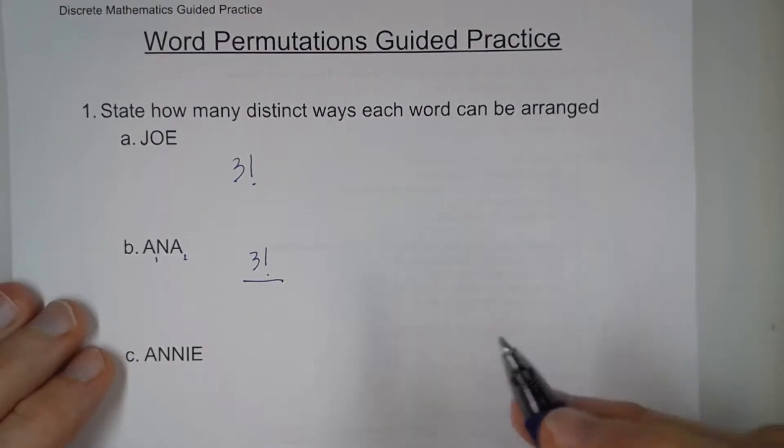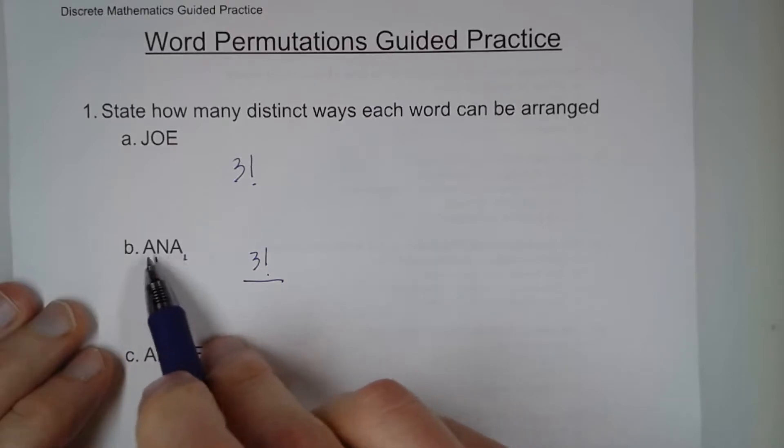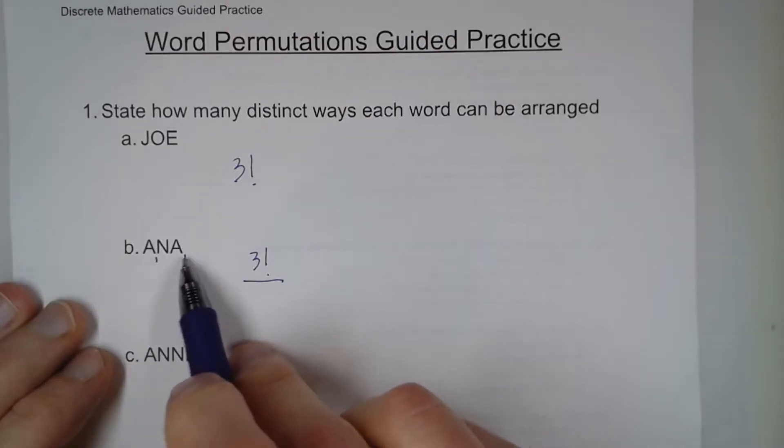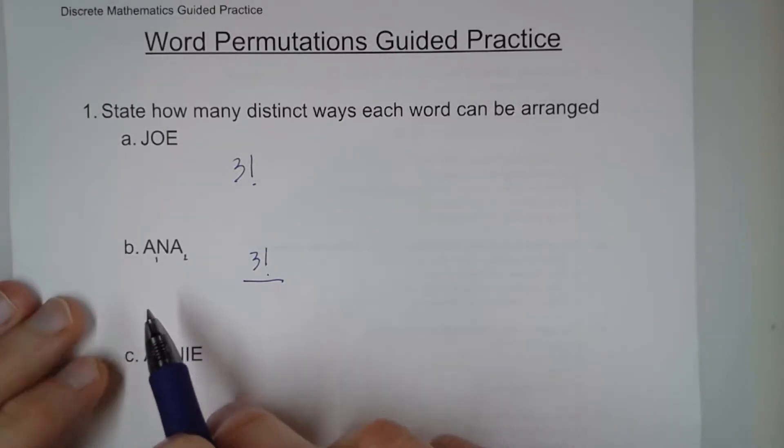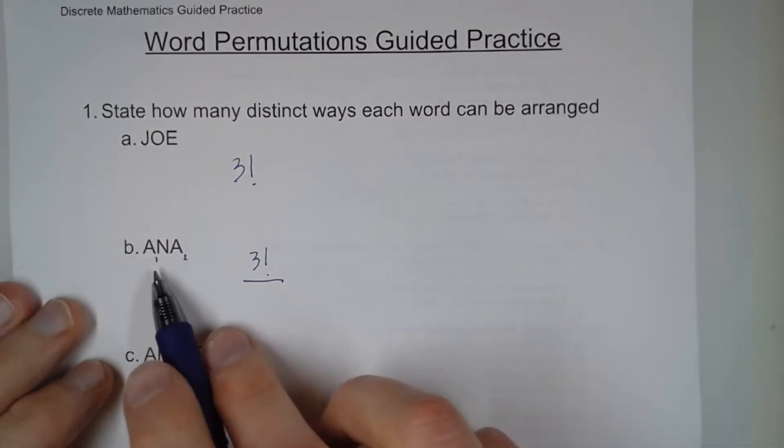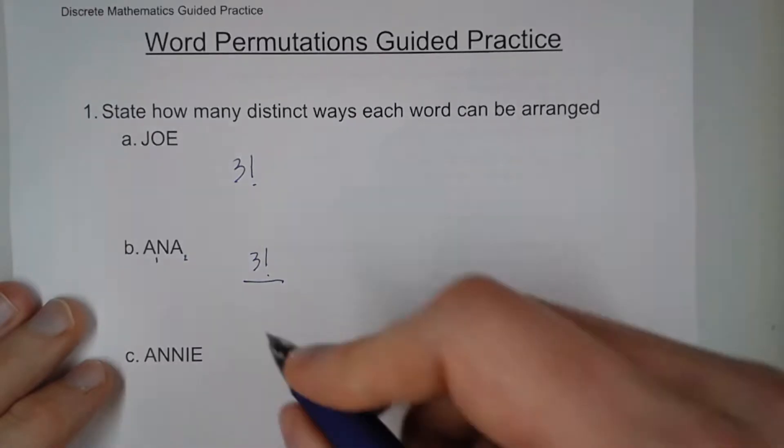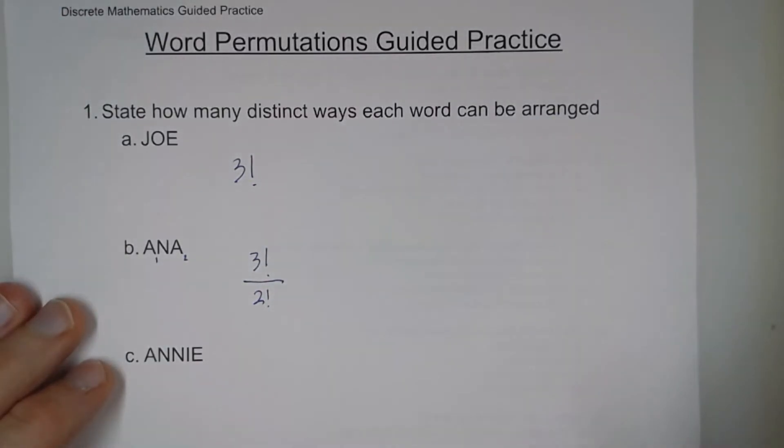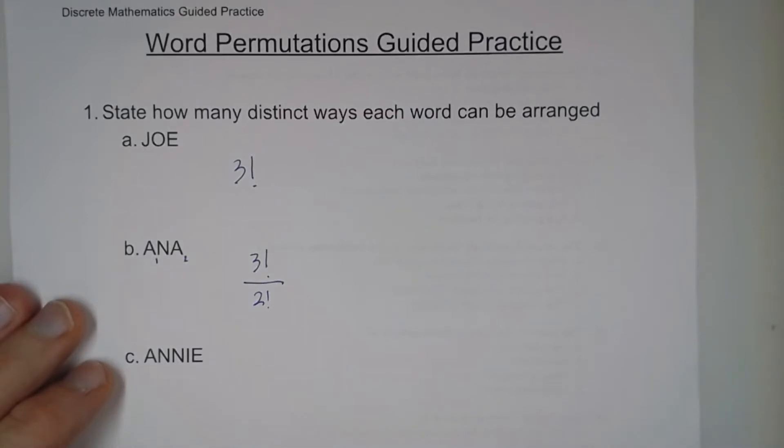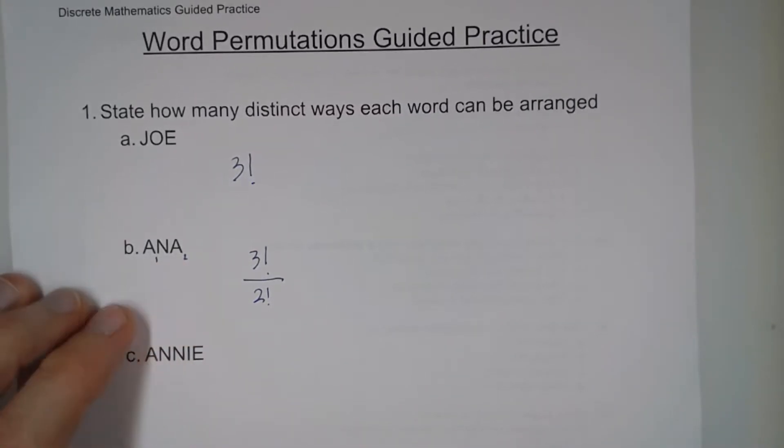And so what happens is that there's two different words, each, with the A and the A that can swap, but still would look the same to our eyes, because we don't use A1 and A2 when we write letters. So because of that, we divide by two factorial. This is the number of ways that the A's can be rearranged.